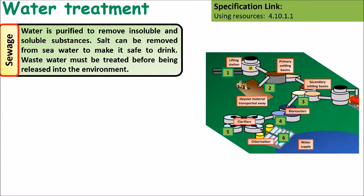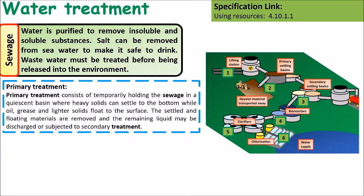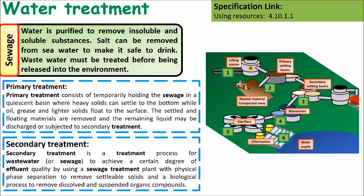Sewage treatment is the process where we treat sewage before it is released back into the environment. It undergoes two main stages: primary treatment, where sewage is temporarily held in basins so heavy solids sink to the bottom and grease and lighter fluids rise to the top — both can be filtered off; and secondary treatment, where wastewater has bacteria and other biological matter broken down so it can be removed.